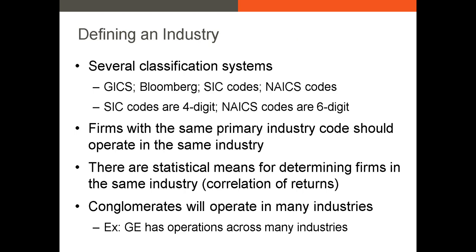Just like we want to analyze macroeconomic conditions, we also want to analyze industry conditions and identify the best industries to overweight in our portfolio. A lot of industries will have various leading indicators that are industry-specific. So let's talk about how we define an industry. The most common ways are classification codes. We have the GIC codes, which are very prominent. Bloomberg will also have its own classification system. We can also use the popular SIC codes, which are four-digit codes, and NAICS codes. Firms with the same SIC or NAICS code will operate in the same industry.